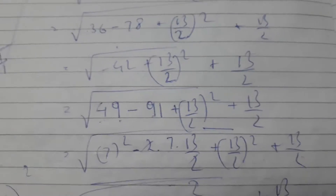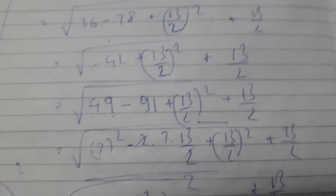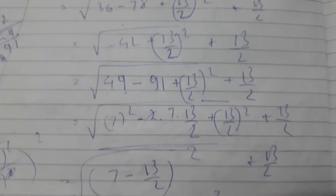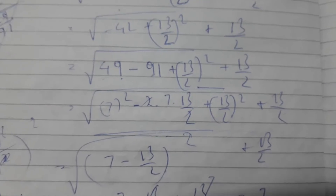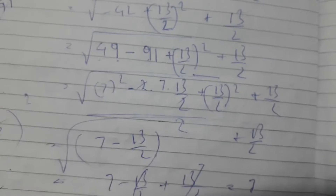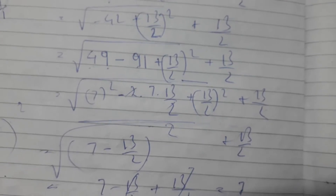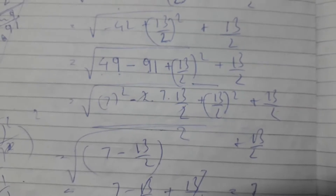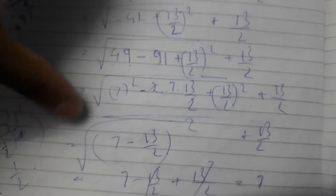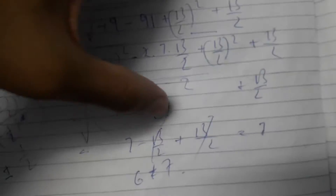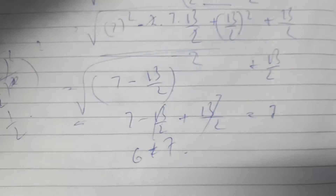Here's the magic. 49 minus 91 plus (7/2)² — that's (13/2)². But 49 is just 7². And 91 can be written as 2 times 7 times 13/2, so the expression becomes the square root of (7 minus 13/2)². We already had plus 13/2, so that gives us 7.